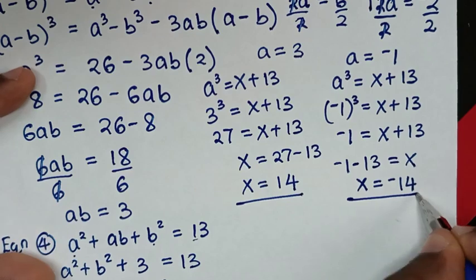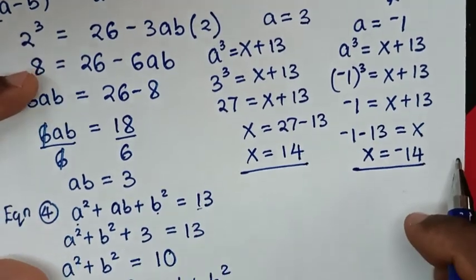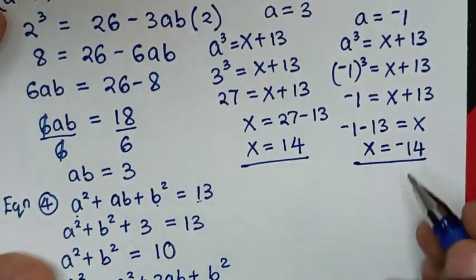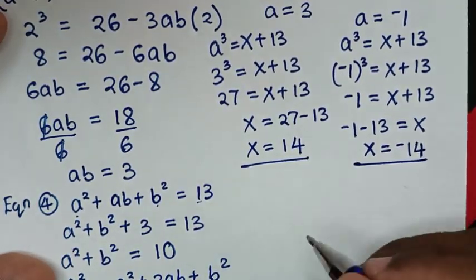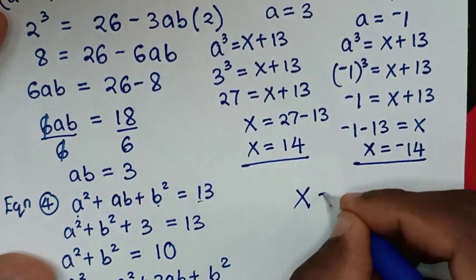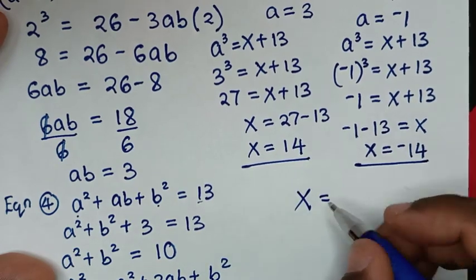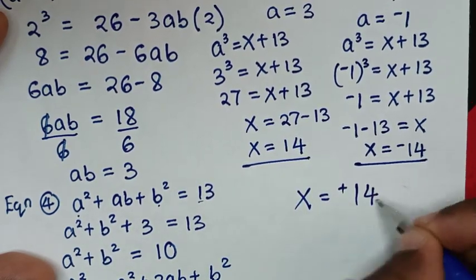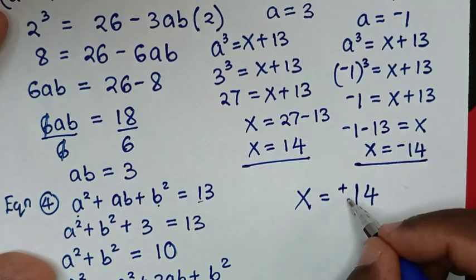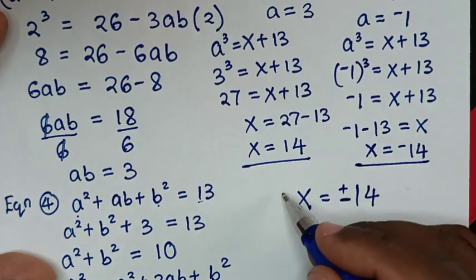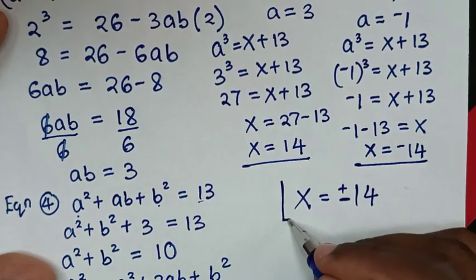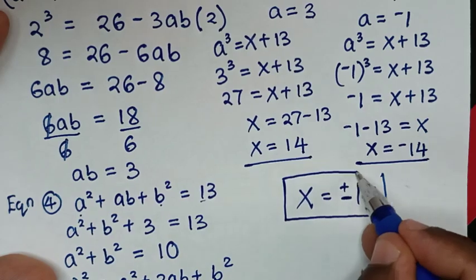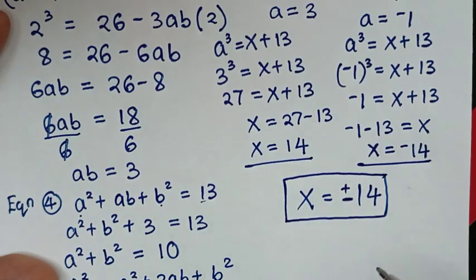So we have two solutions. Therefore, the conclusion is x = 14 and x = -14. These are the values of x in this problem.